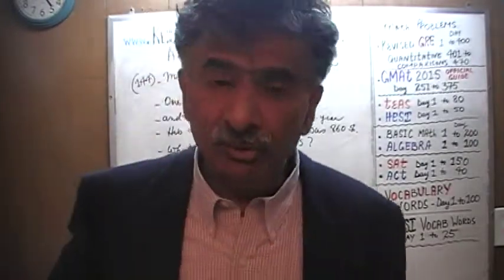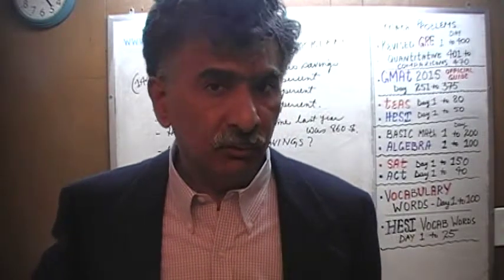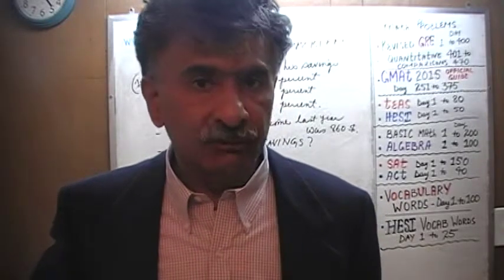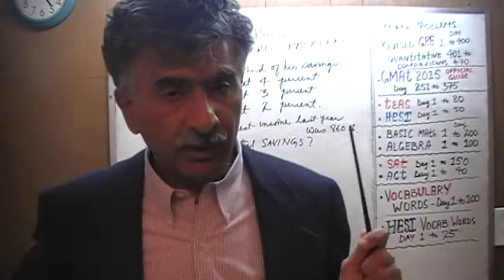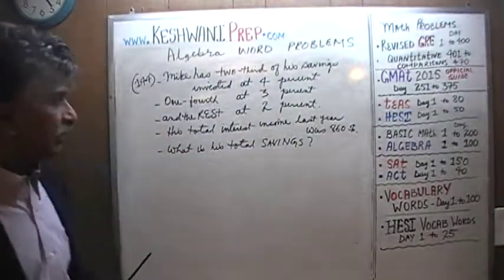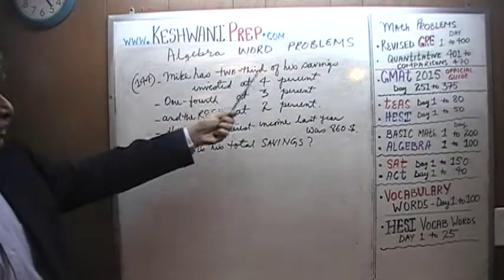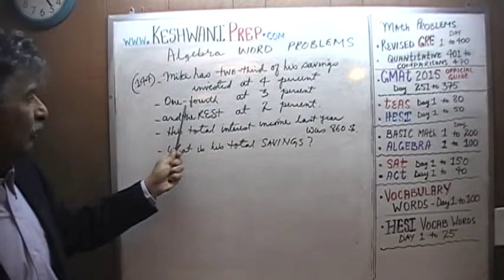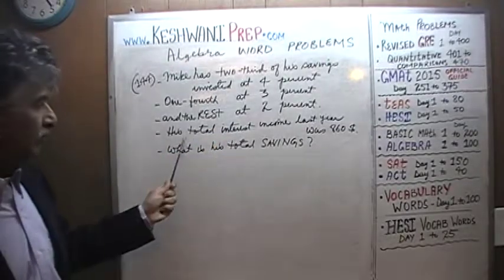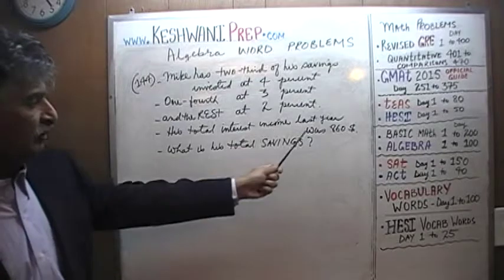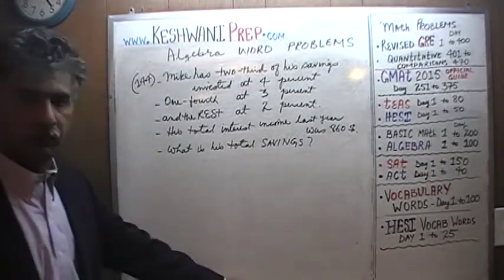If you wish, you can try it on your own. Pause the video, solve the problem, and once you have done so, compare your work against what we'll do together. One more time: Mike has two-thirds of his savings invested at 4%, one-fourth at 3%, the rest at 2%. His total interest income last year was $860. What is his total savings?